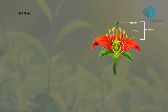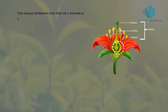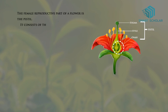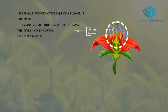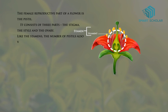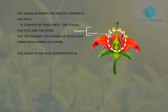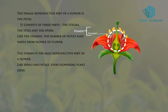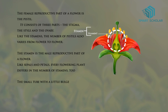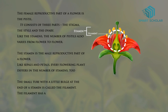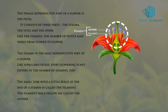The female reproductive part of a flower is the pistil. It consists of three parts: the stigma, the style, and the ovary. Like the stamen, the number of pistils also varies from flower to flower. The stamen is the male reproductive part of a flower. Like sepals and petals, every flowering plant differs in the number of stamens too. The small tube with a little bulge at the end of the stamen is called the filament. The filament has a yellow sac called the anther.